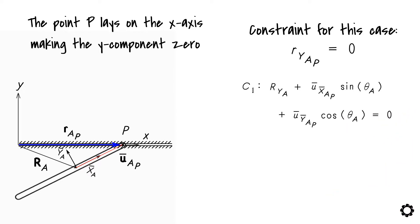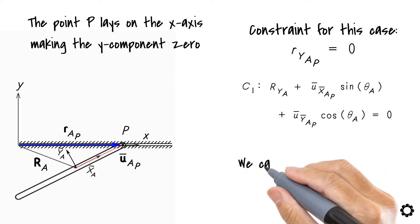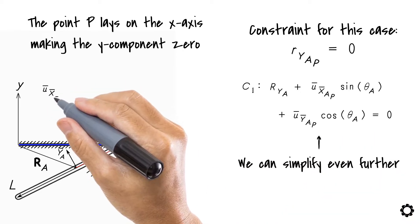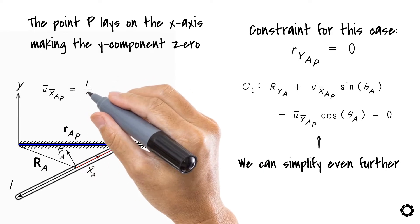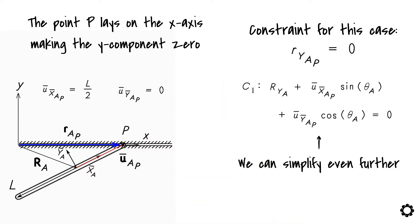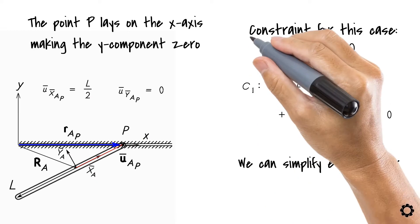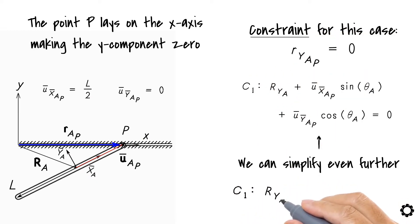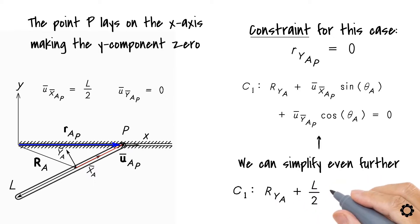To be more explicit about the model used, we can simplify even further our constraint equation. Since U_bar_X_bar_AP equals L/2 and U_bar_Y_bar_AP equals 0, we get that the constraint for this problem is finally written as C1 equals R_Y_A plus (L/2) sin(theta_A) equals zero.